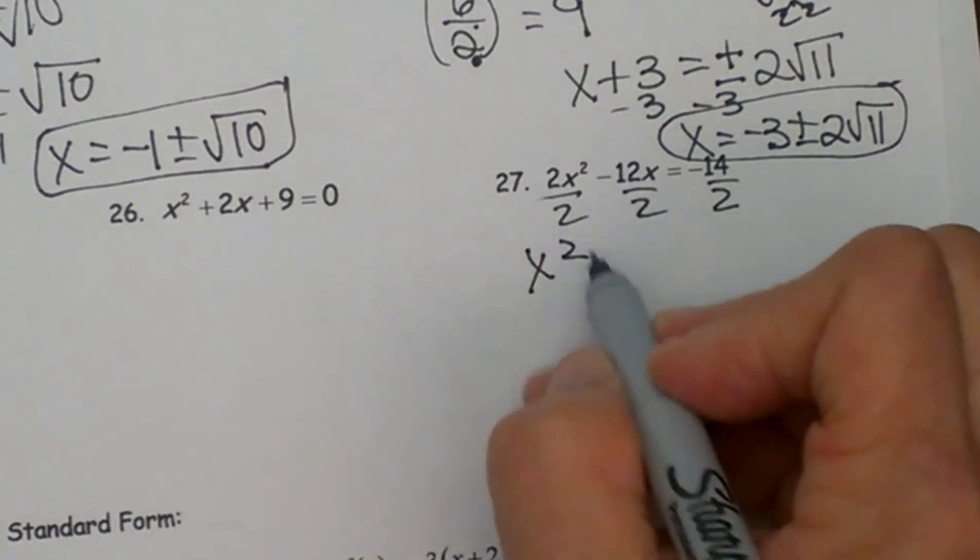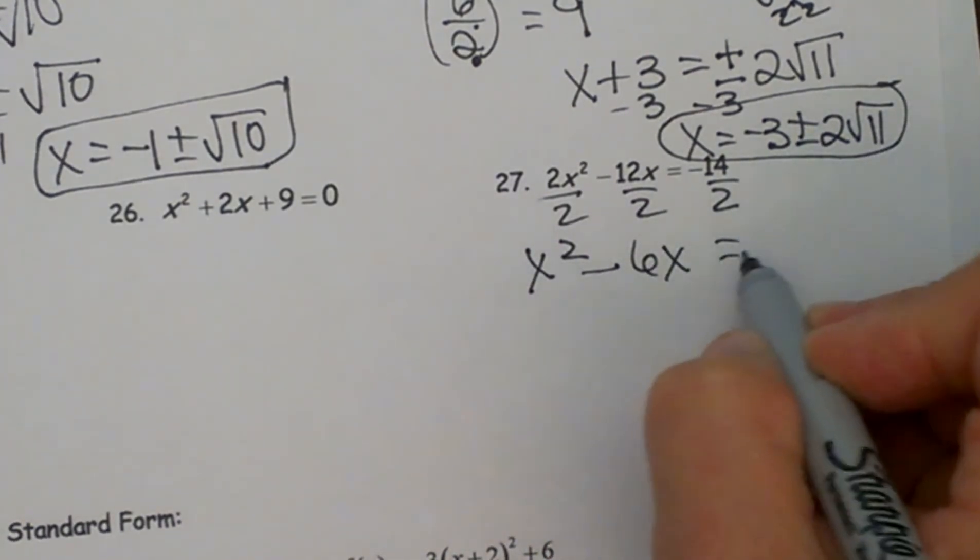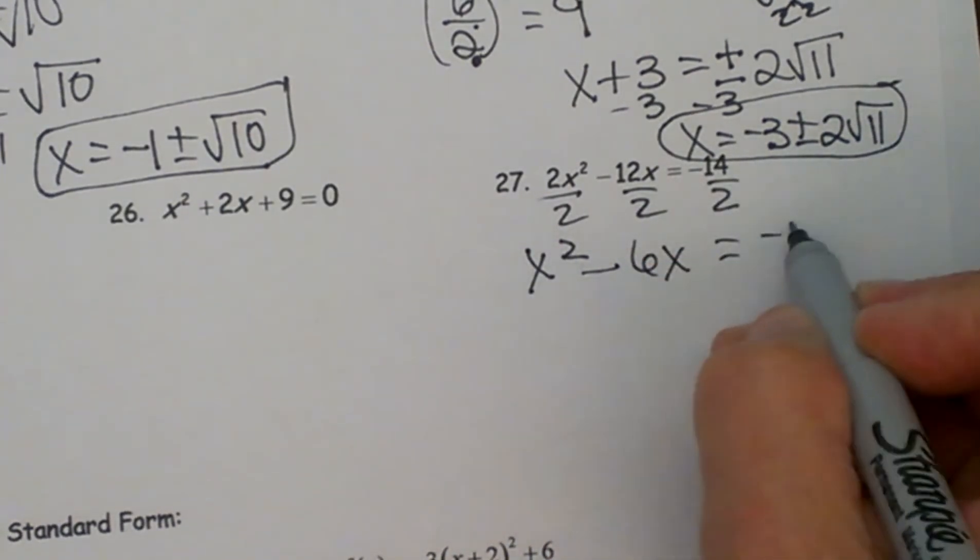So I am going to divide by 2. So x² minus 12 divided by 2 is 6x is equal to negative 14 divided by 2 is negative 7.